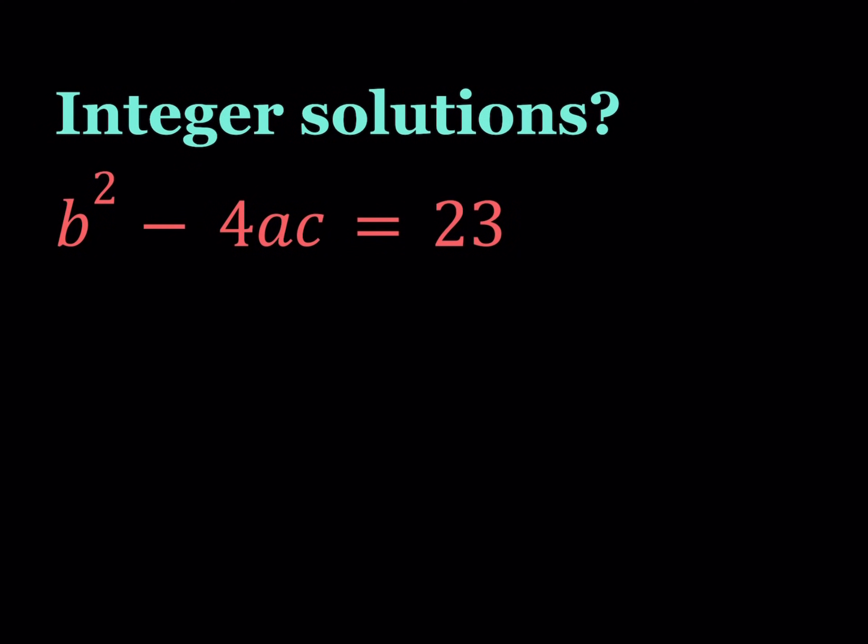Hello everyone. In this video we're going to be solving an equation for integer solutions. We have b squared minus 4ac equals 23, and a, b, c are all integers.